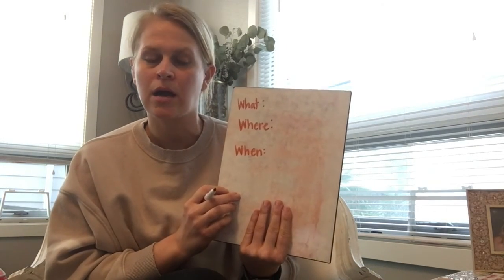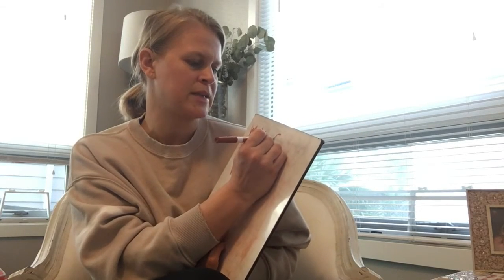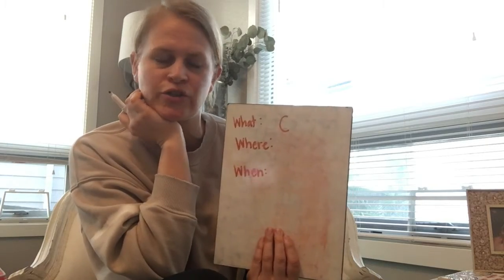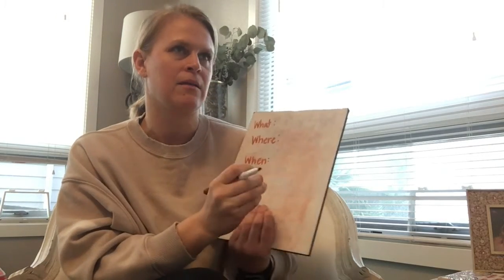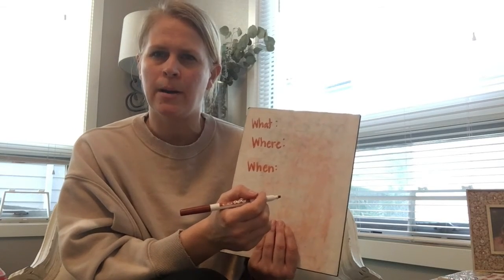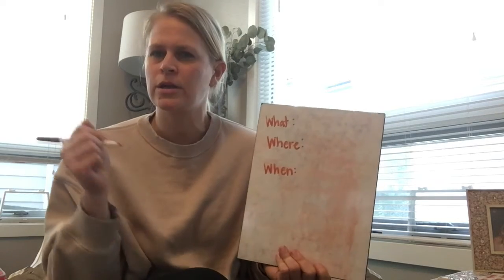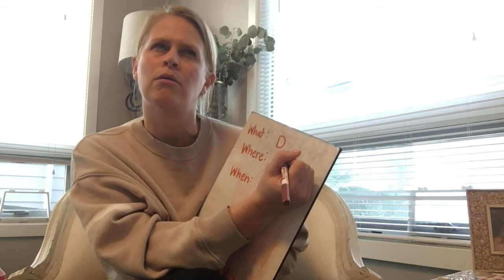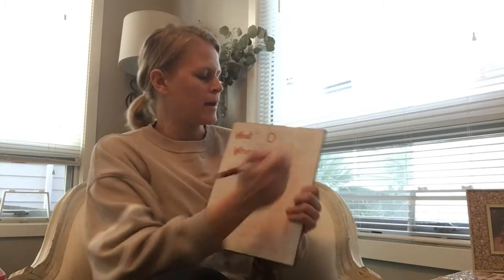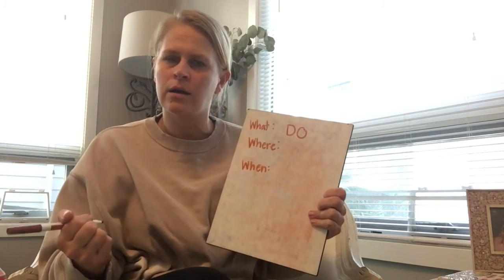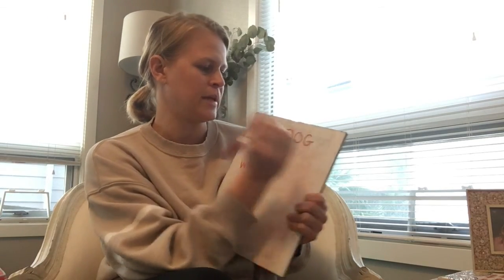Now you need to decide what kind of party it's going to be. Is it going to be a costume party? You could just write a C, or you could draw a picture of a costume. Is it going to be a birthday party? Birthday starts with B. Is it going to be a dog party? D-O-G — dog starts with D, then the 'ah' sound is O, then G.